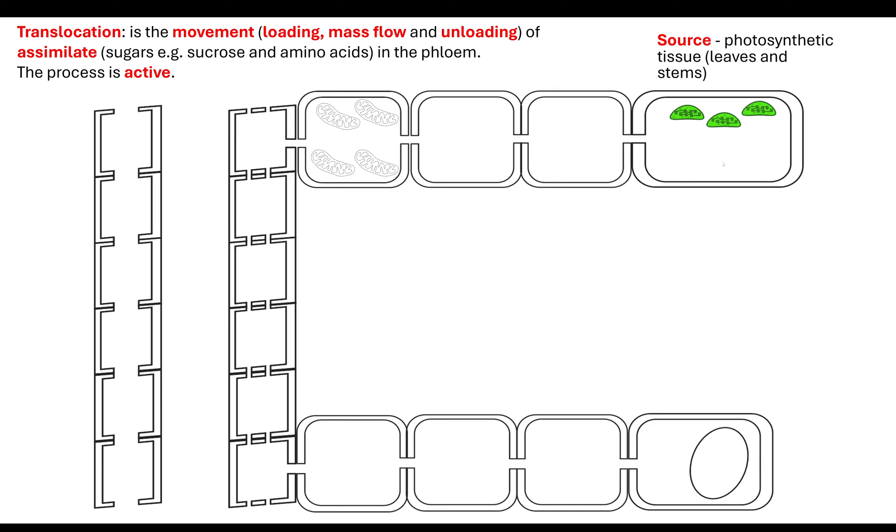The first thing to note is that it goes from the source, the photosynthetic tissue—leaves and stems—all the way to the sink. The sink can be roots and meristem. So how does it get from that source, transported through the process of mass flow, and then unloaded at the sinks?